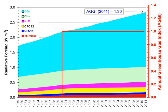The annual airborne fraction increased at a rate of 0.25 ± 0.21% per year over the period 1959–2006.